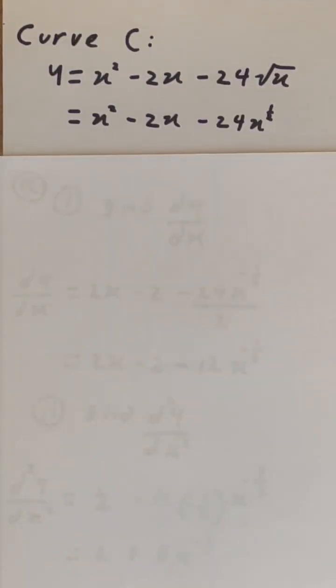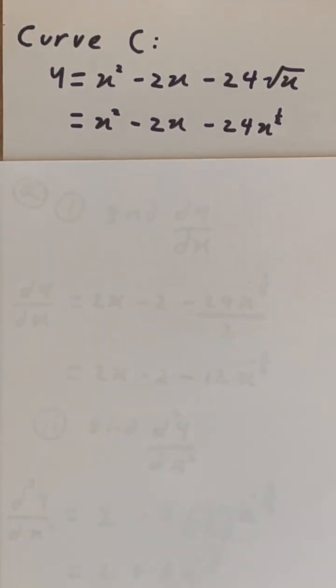We are given an equation: y equals x squared minus 2x minus 24√x. We can rewrite the third term as x to the power of half, as shown.